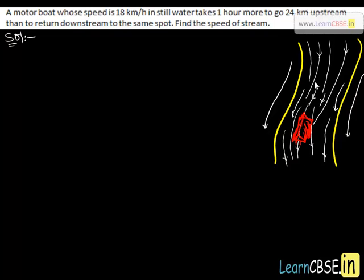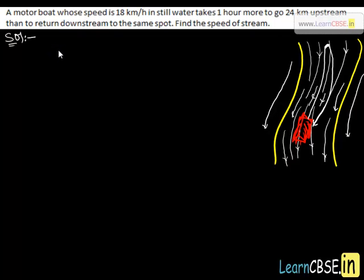According to the problem, we have a stream and a boat traveling with a speed of 18 kilometers per hour. It moves upstream, takes some time, then comes back to the same spot taking one hour more. We have to find the speed of the stream. Let us assume x kilometers per hour be the speed of stream.